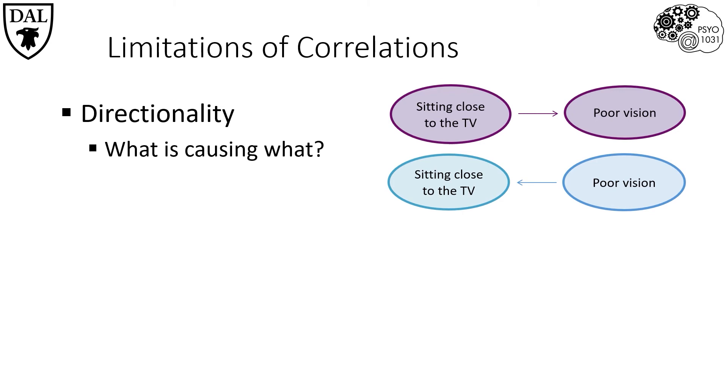With a correlational design, we are not able to tell whether one variable causes the other, only that the variables are linked.